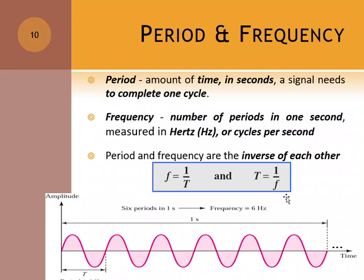Period and frequency are the inverse of each other. So you have to know this formula: F equals 1 over T, T equals 1 over F.